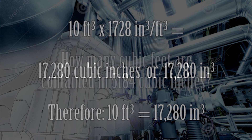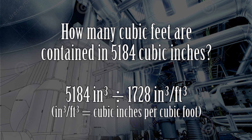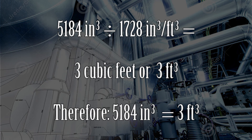Now let's go the other way. I have an object that's 5,184 cubic inches and I want to find out how many cubic feet there are. All I need to do is take my 5,184 cubic inches and divide it by 1,728 cubic inches per cubic foot. Please pause the video and punch these numbers into your calculator. The answer is 3 cubic feet. So 5,184 cubic inches equals 3 cubic feet.